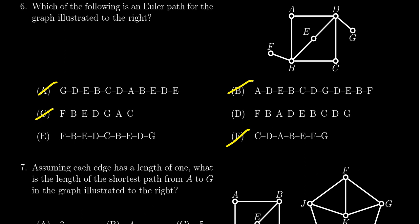We've already got it down to 50-50 here, E and D, so I'm only going to check those ones. Looking at D right here, D says go from F to B to A to D to E to B to C to D to G. That sure sounds like an Euler path to me.